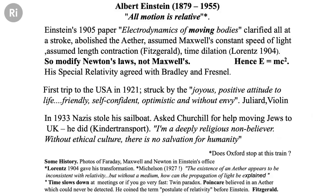Einstein played the violin. He was once asked if he hadn't been a physicist, what would he have done — he said he'd have been a musician. In 1933, the Nazis stole his sailboat — that was kind of the last straw. At that point he moved to Princeton and stayed there until he died in 1955. Before that, he'd asked Churchill for help moving Jewish children out of Germany, which Churchill did in response to Einstein's letter. My boss at Oxford, Sir Peter Hirsch, was one of those children. Einstein said he was a deeply religious non-believer. And very poignant words: 'Without ethical culture, there is no salvation for humanity.'